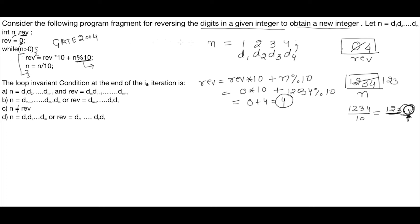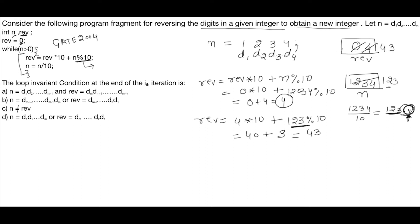n is still greater than 0 since n is now 123. Again we perform: REV = REV * 10 + n % 10. REV is currently 4, so REV = 4 * 10 + (123 % 10) = 40 + 3 = 43. Therefore REV becomes 43. Then n = 123 / 10, and since n is an integer variable, n becomes 12.